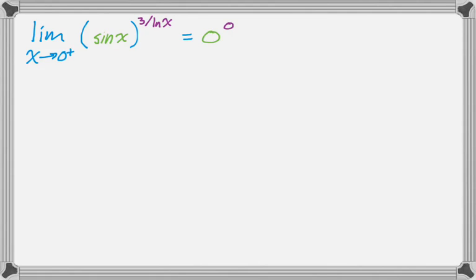So, sine still approaches 0. And then you have a 3 over kind of negative infinity because natural log approaches negative infinity as you approach 0 from the right. So, 3 over negative infinity is just 0. So, 0 to the 0, not clearly defined.